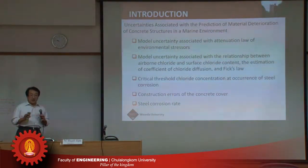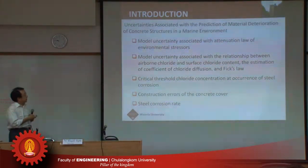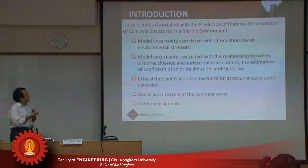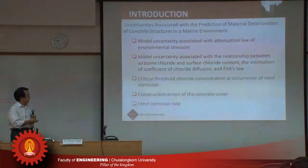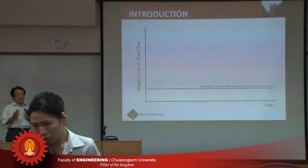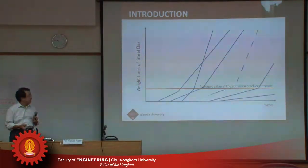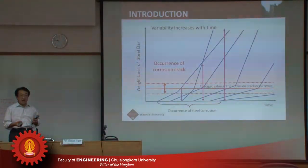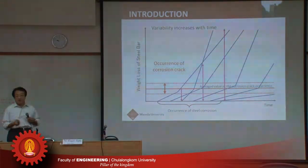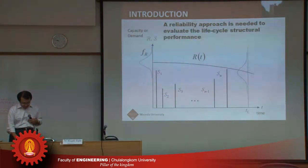There are many kinds of uncertainties associated with the prediction of material deterioration of concrete structures, such as model uncertainty associated with the attenuation law of environmental stressors, construction errors, and steel corrosion rate. Because of the presence of these uncertainties, the time after the occurrence of corrosion and the time after the occurrence of corrosion cracking are very variable. Variability associated with steel weight loss increases with time.